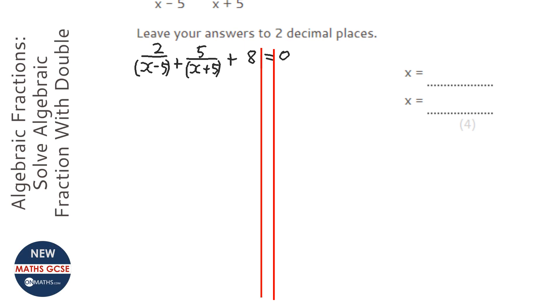I'm going to times everything by the first denominator, so x minus 5. I'm going to times everything on the left-hand side and actually times everything on the right-hand side, but it's zero anyway, so it's not going to do anything.